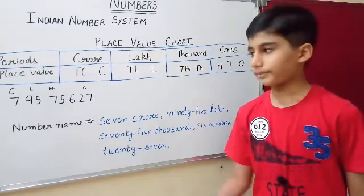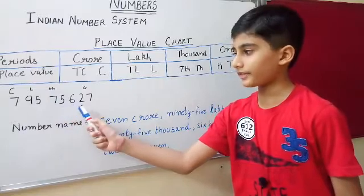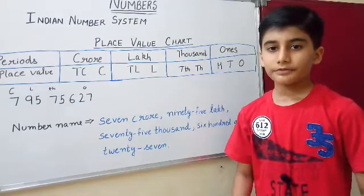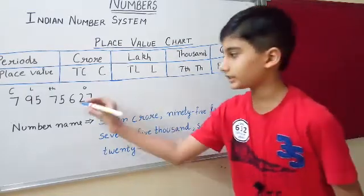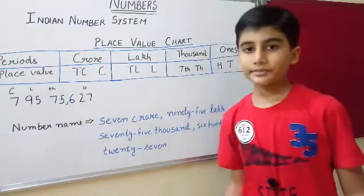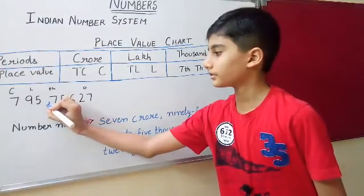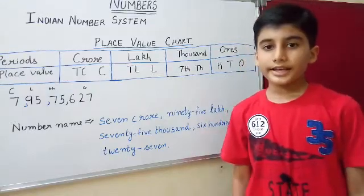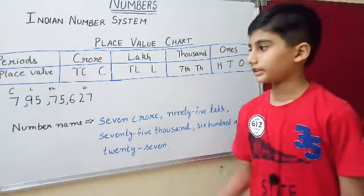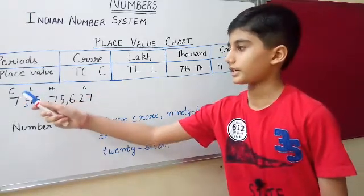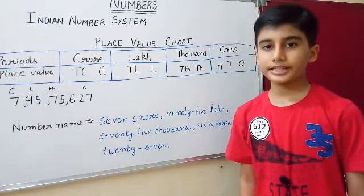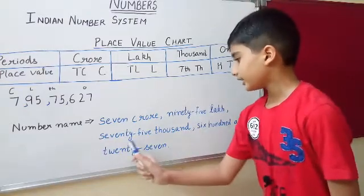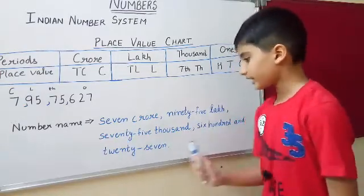Now let us see one more example with the number 7,95,75,627. Let us convert this number into standard form. First we insert a comma after three digits, then we insert a comma after every two digits. We have divided the number into four periods: ones, thousands, lakhs, and crores. With the help of these periods we are able to write the number name: 7 crore, 95,75,627.